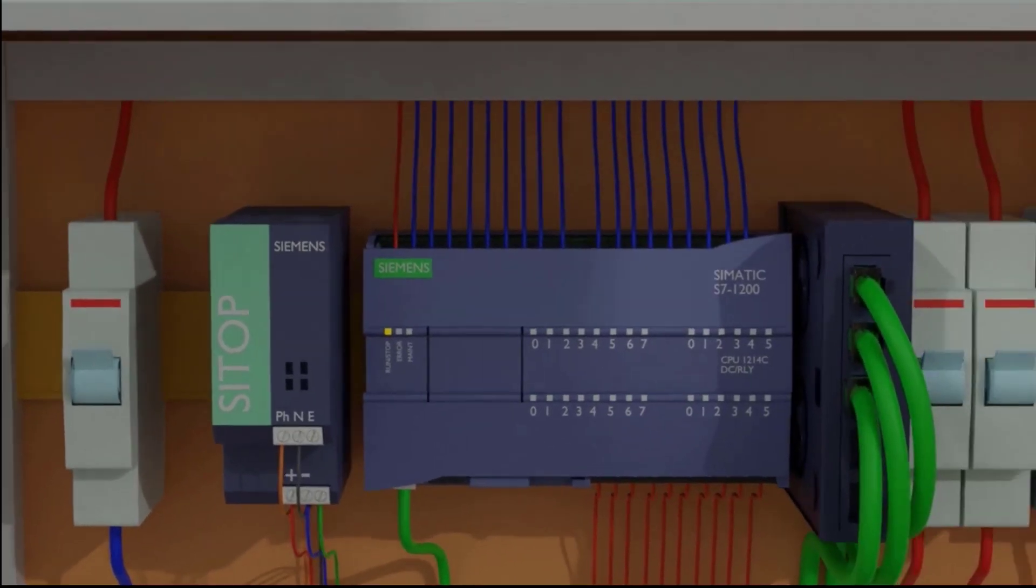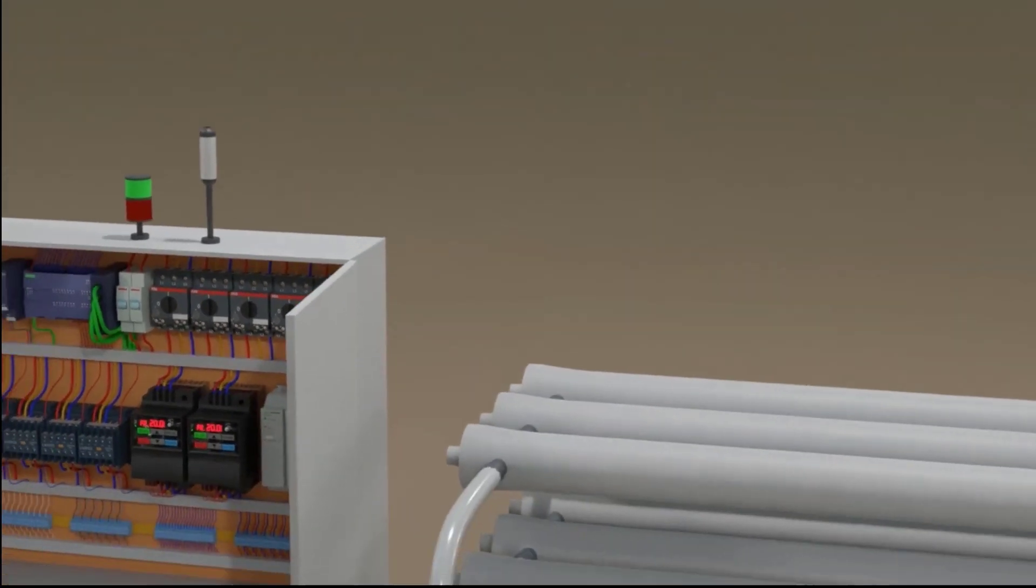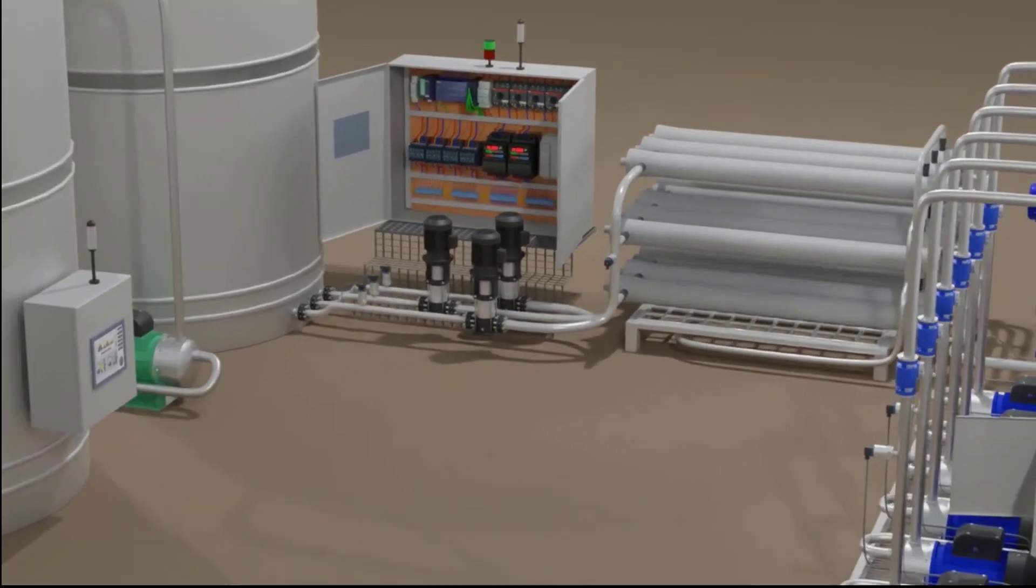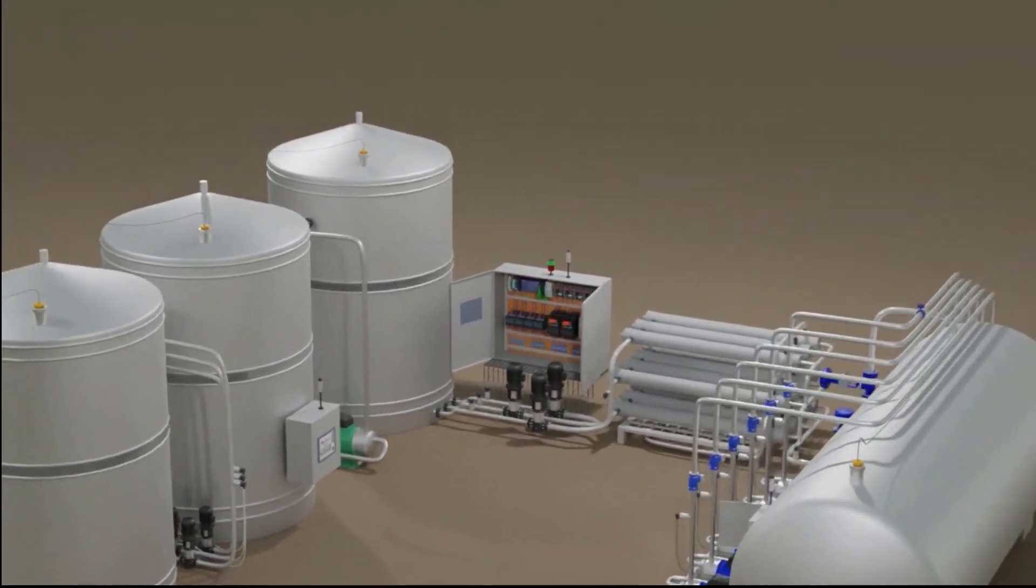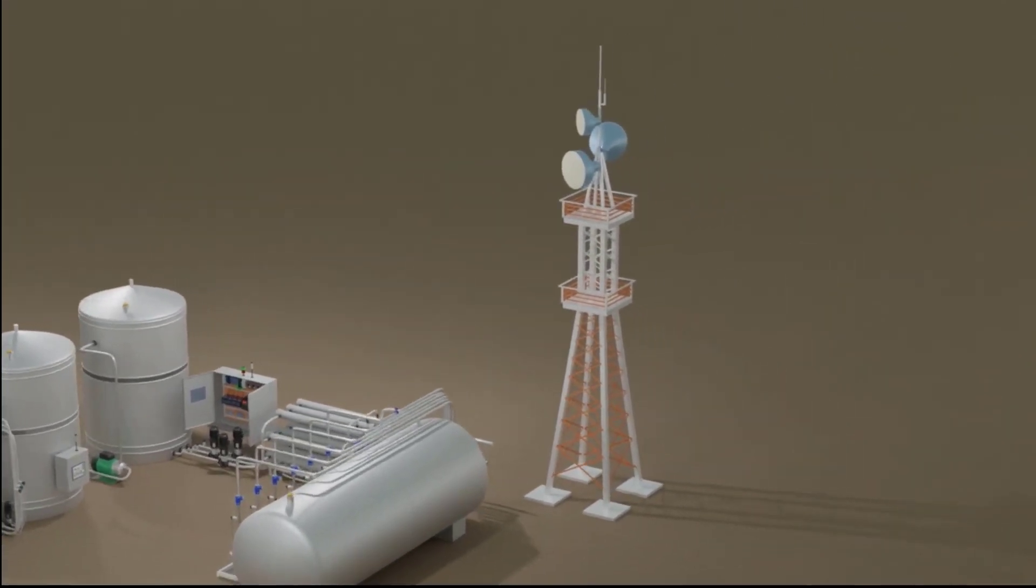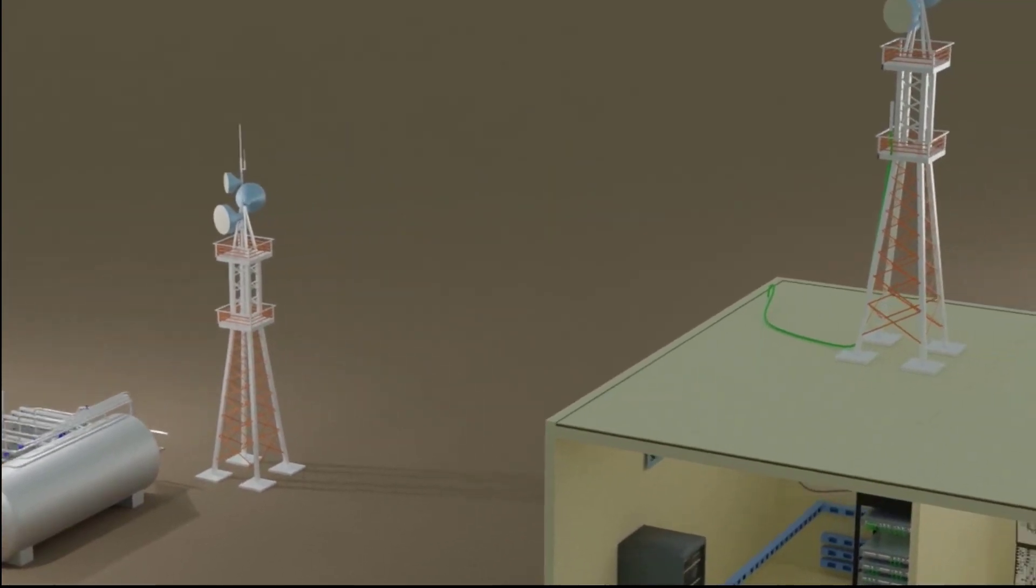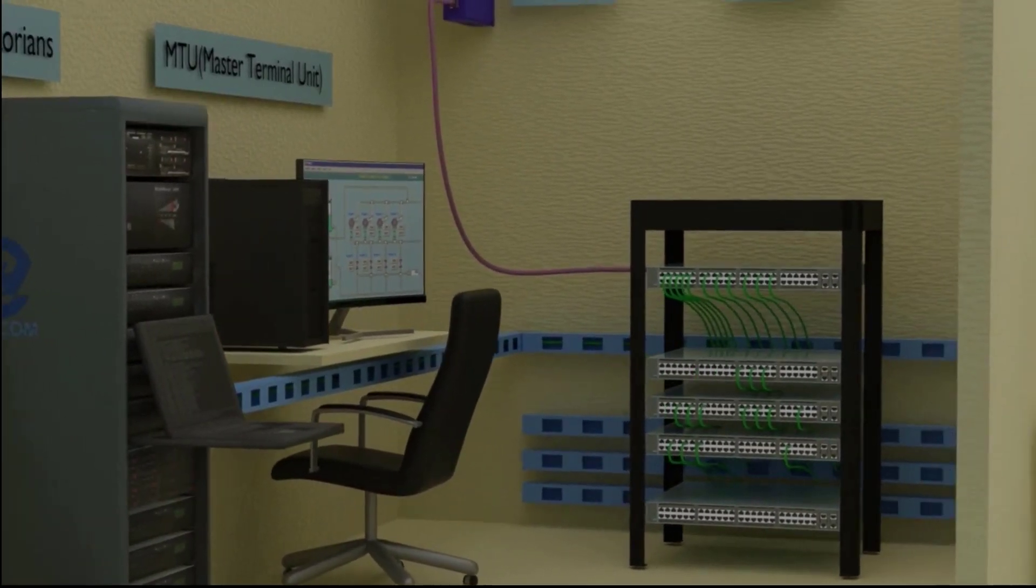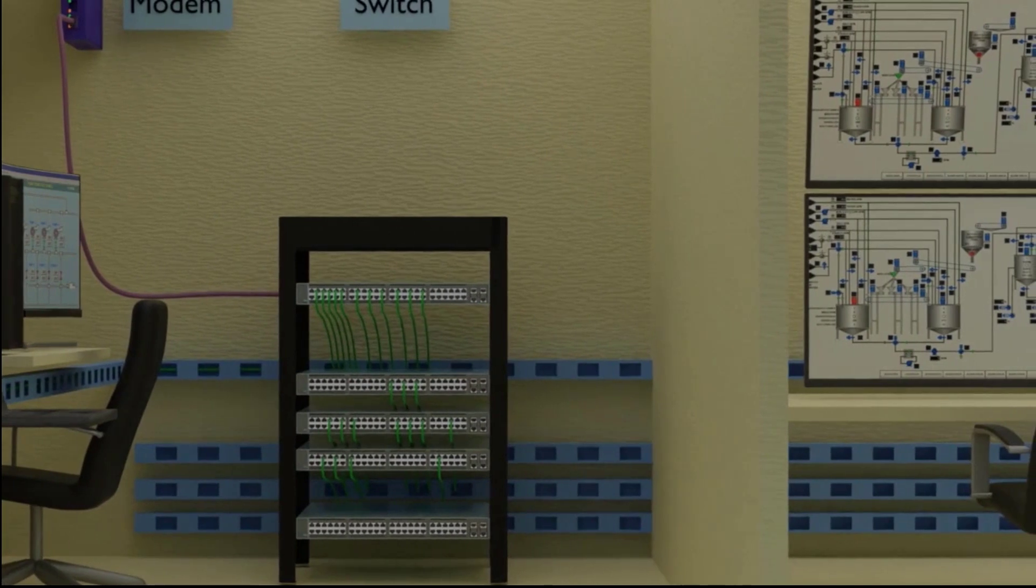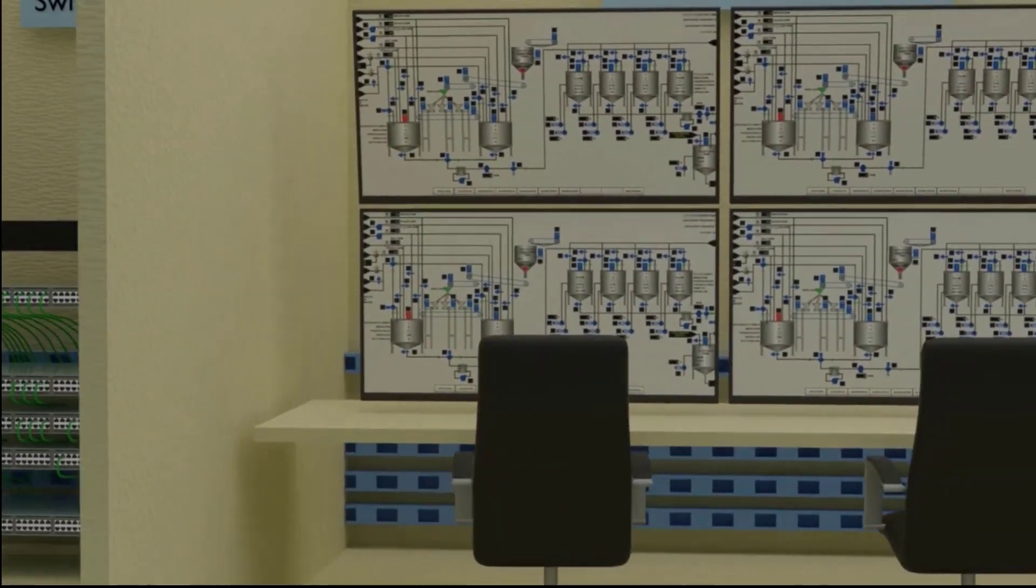Step 4: Study DCS SCADA. Dive deeper into distributed control systems (DCS) and supervisory control and data acquisition. Understand how DCS systems are designed to control processes in various industries. Learn how these systems integrate with PLCs and other devices to manage complex industrial processes.